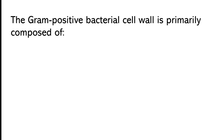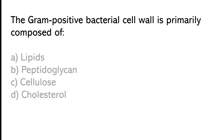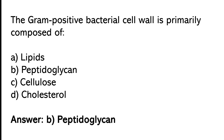The gram-positive bacterial seal wall is primarily composed of: lipid, peptoglycan, cellulose, or cholesterol. The correct answer is option B. The gram-positive bacterial seal wall is primarily composed of peptoglycan.